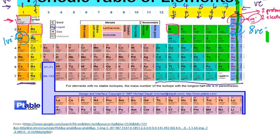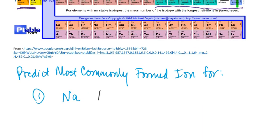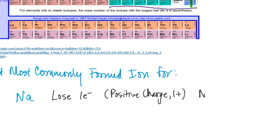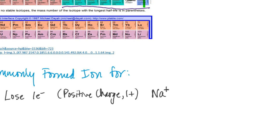Instead, if sodium is going to achieve neon's configuration, it will have to lose its 1 valence electron, leaving it with 8 valence electrons in neon's configuration. Because of that, sodium is more likely to lose one electron. When an atom loses electrons, it picks up a positive charge, so losing one electron gives a charge of 1 plus.